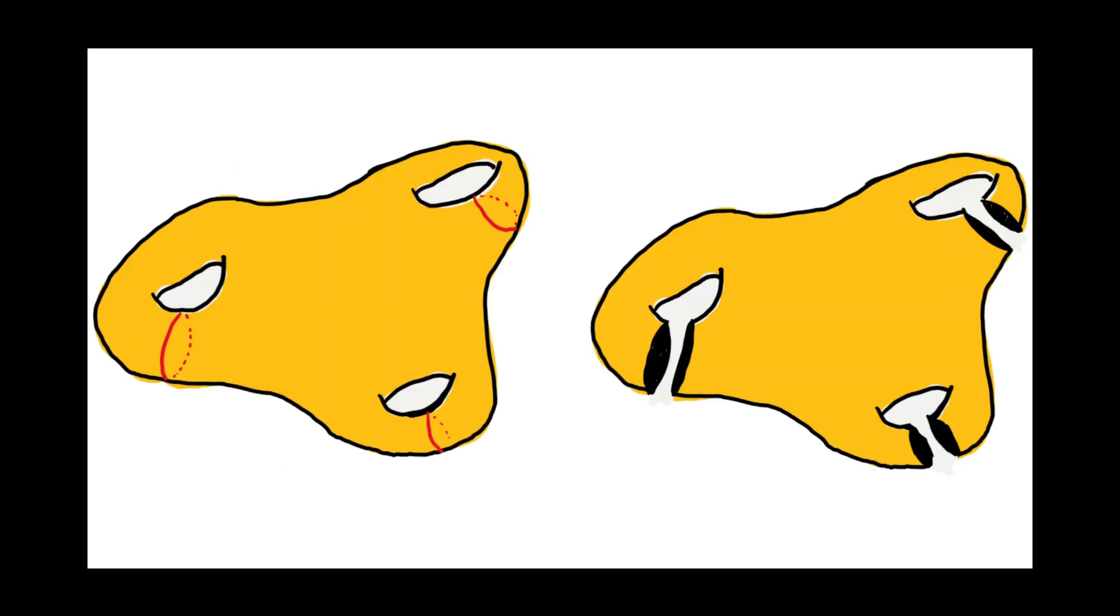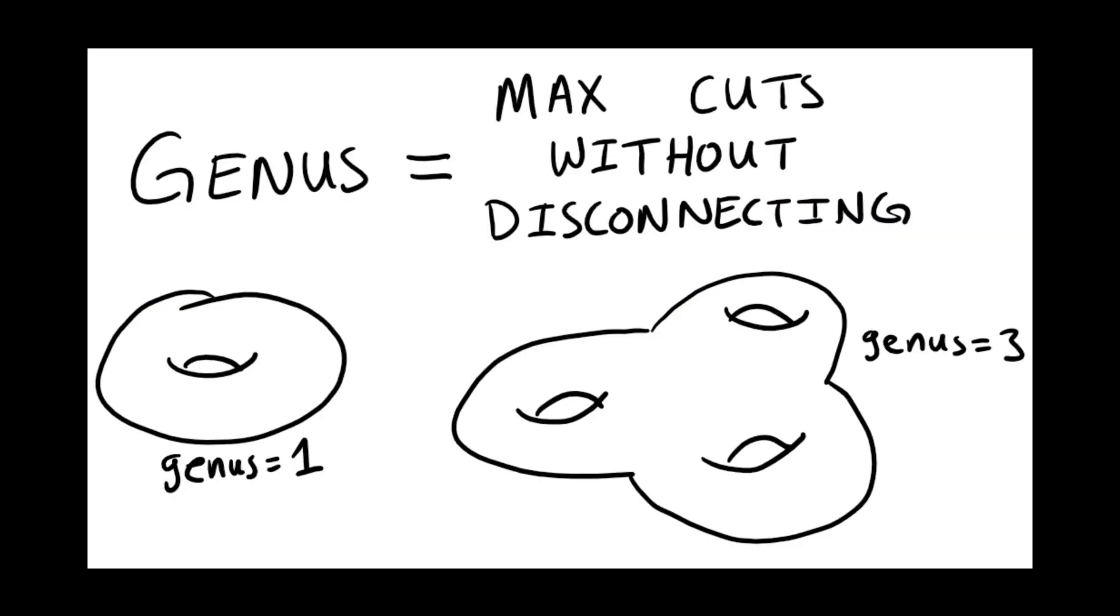But, the more holes the space has, the more cuts you can make without disconnecting the space. In technical terms, we call the maximum number of loops you can cut out without disconnecting the surface the genus of the surface. There we go, holes explained!